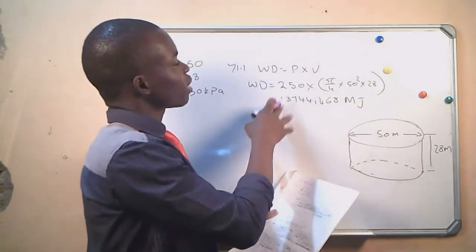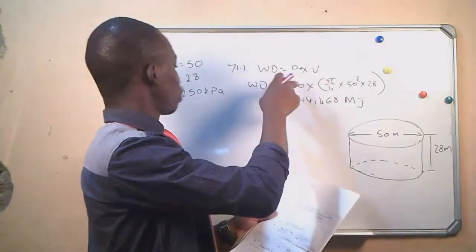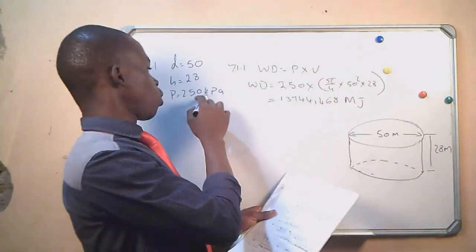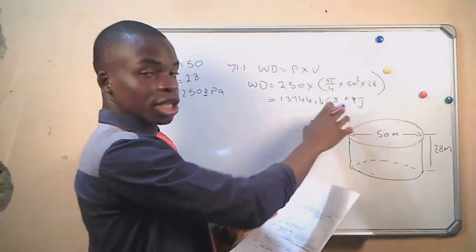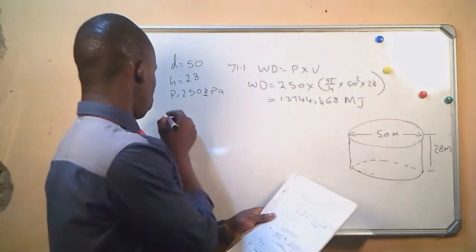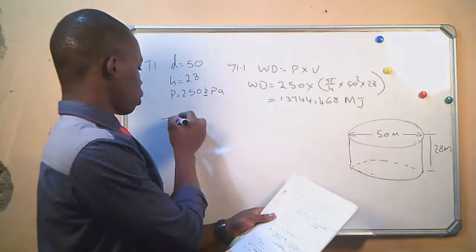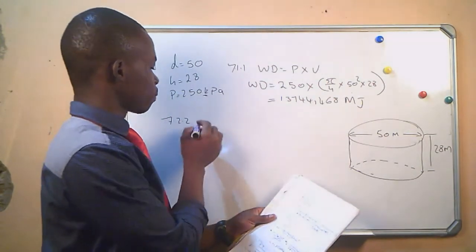The answer is 13,744.468 megajoules. The answer was initially in kilo because the pressure was in kilopascals, and we have converted it to mega because the value was very large. We now move on to the second question, 7.1.2.